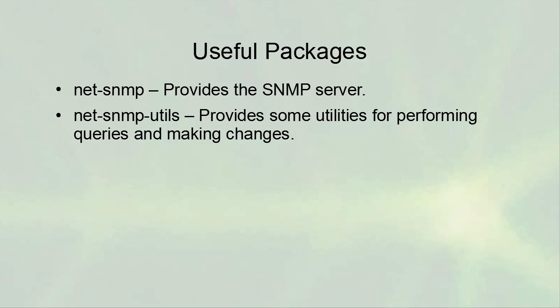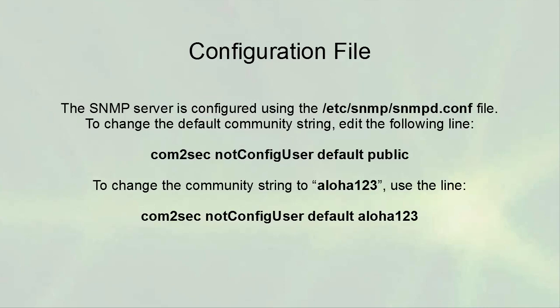Some useful packages: 'net-snmp' provides the SNMP server, and 'net-snmp-utils' provides utilities for performing queries and making changes, including snmpget, snmpset, and snmpwalk. To configure the server, edit the '/etc/snmp/snmpd.conf' file. One of the most common changes is updating the community string — find the line 'com2sec notConfigUser default public' and change 'public' to something else, for example 'aloha123'.